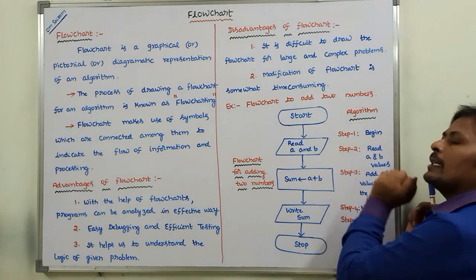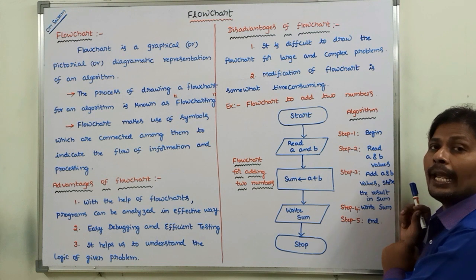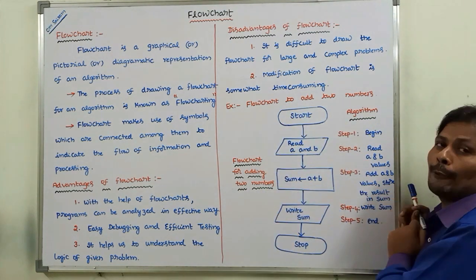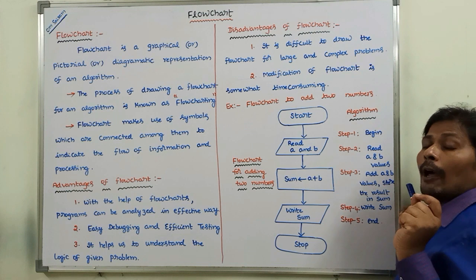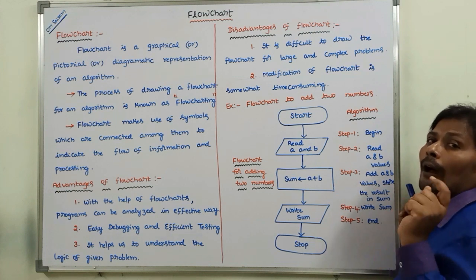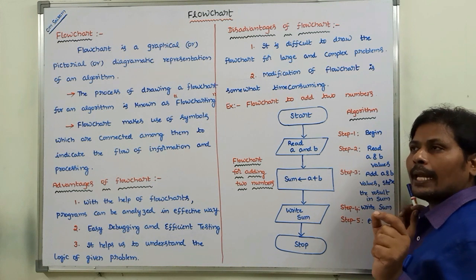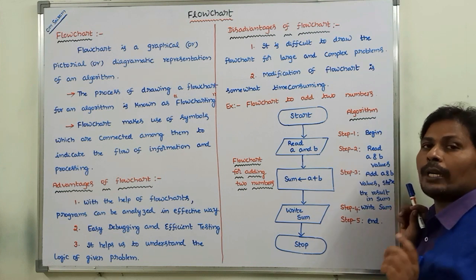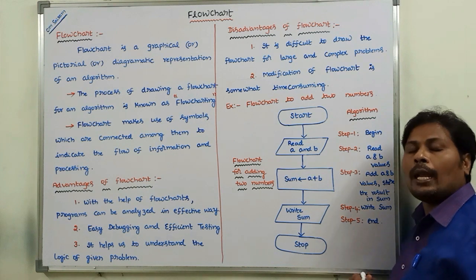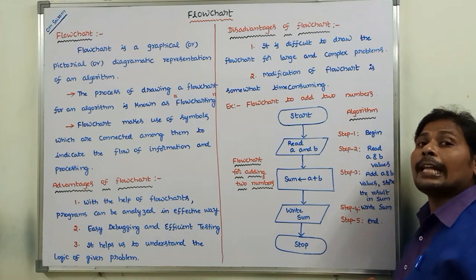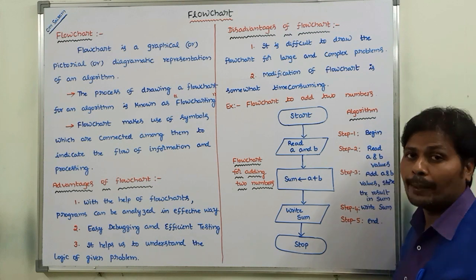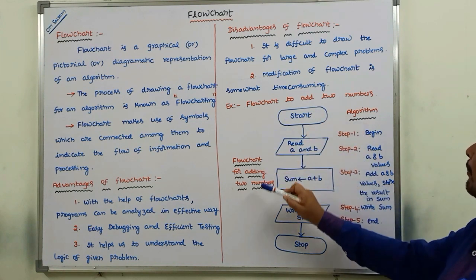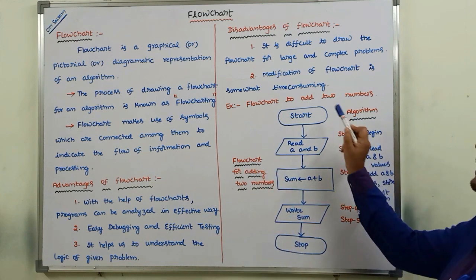Now, this algorithm can be represented in a graphical or pictorial form — then it is called a flowchart. A flowchart is nothing but the graphical representation of an algorithm. So this algorithm can be represented in a graphical, pictorial, or diagrammatic manner.